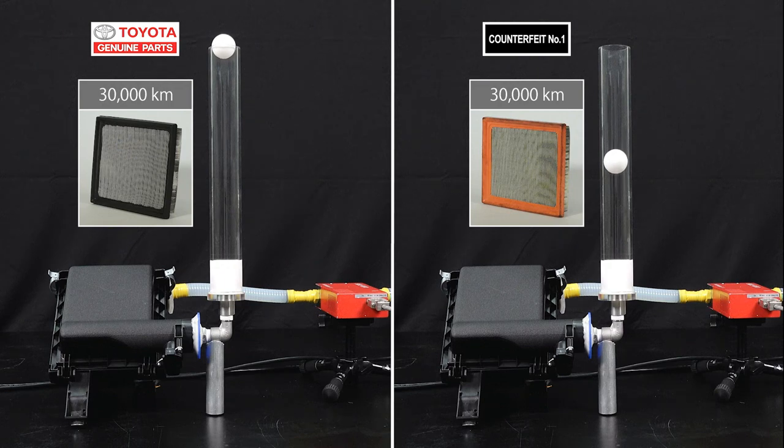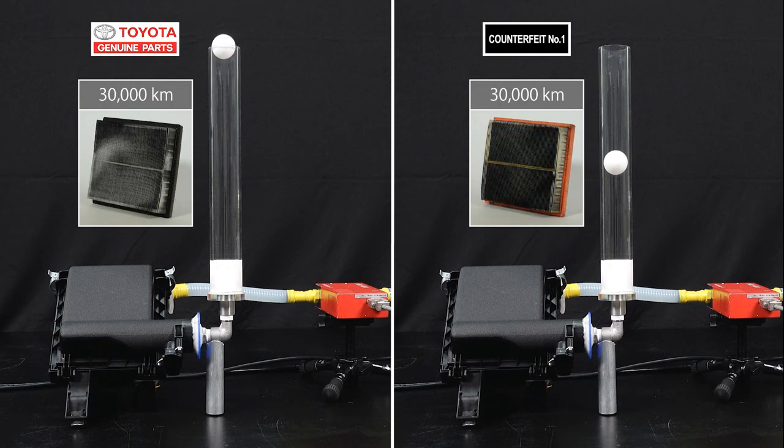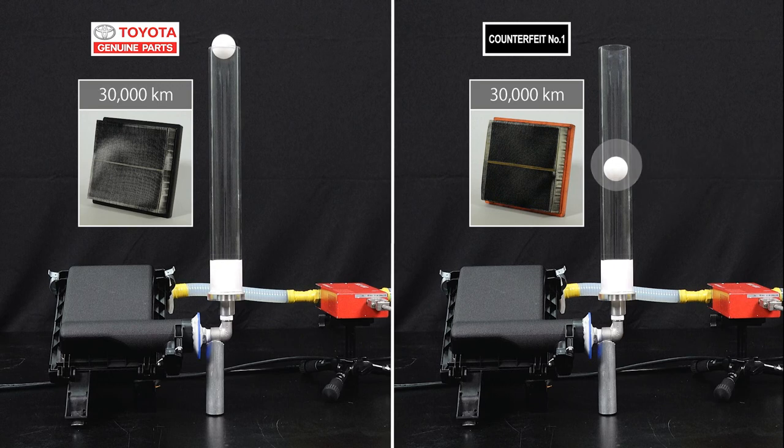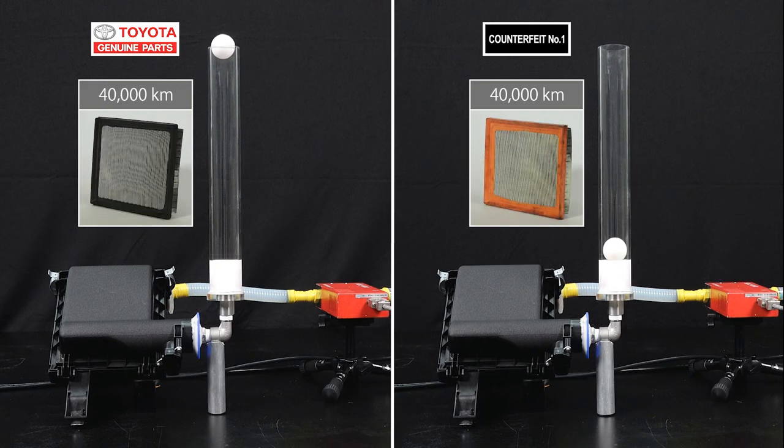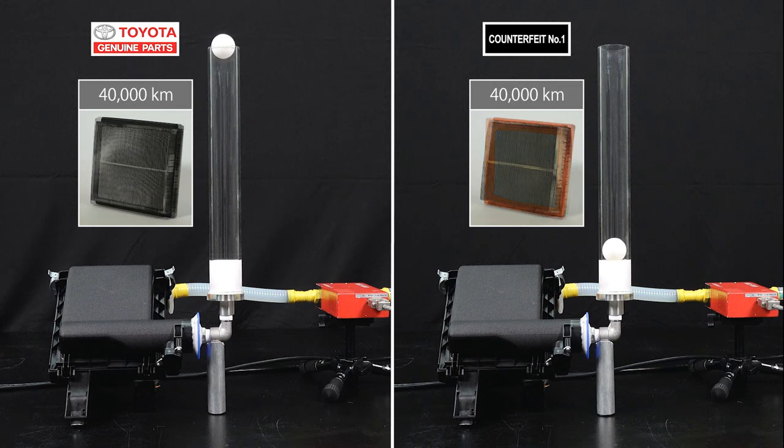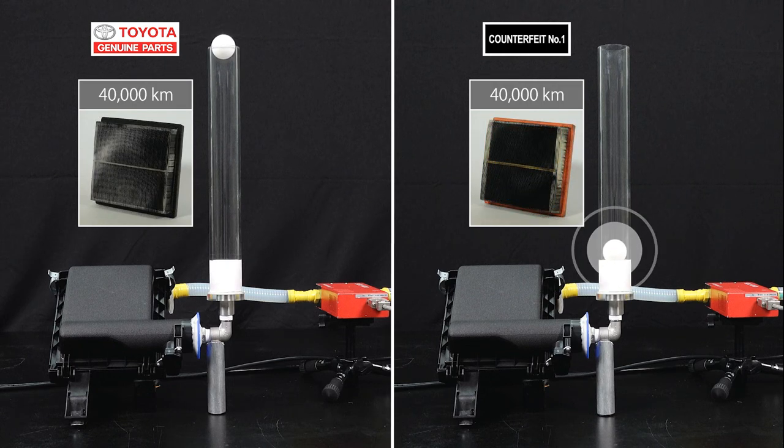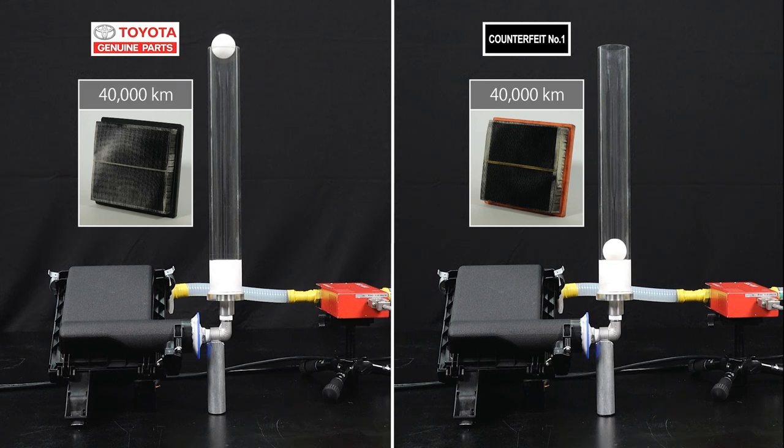At 30,000 kilometers, the genuine part hasn't changed at all. But the counterfeit air filter has gone even lower. Whoa! Even at 40,000 kilometers, the genuine air filter is still up there. Look at the counterfeit one. It's gone all the way down.